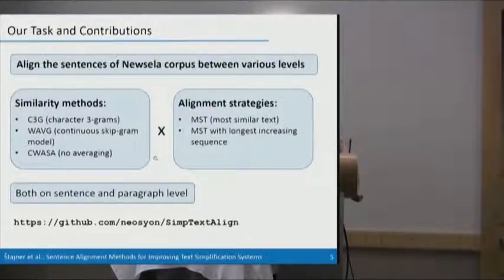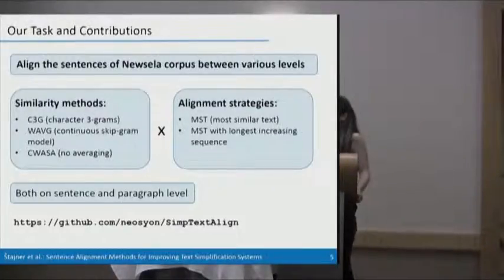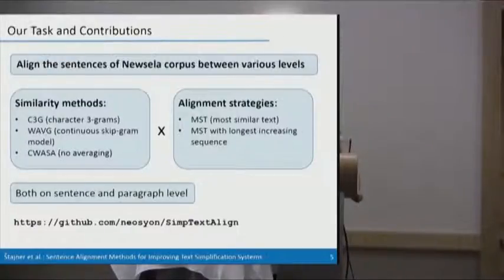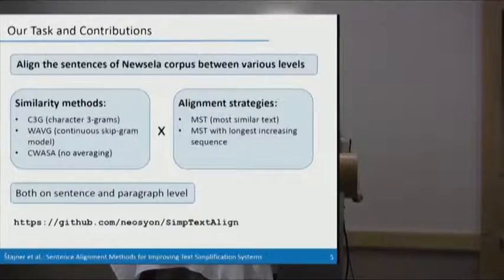And then we couple these three similarity methods with two different alignment strategies. The first one is the simplest one. We are just choosing the most similar text snippets or sentences. And the other one, we use the most similar text but with longest increasing sequence. What it means is we are assuming that the order of information in original and simplified text is always preserved. And we do this both on sentence and paragraph level because the Newsela text when you get the document aligned you also have the division of paragraphs. So we are trying both to align the paragraphs and the sentences. And the software is freely available on GitHub.